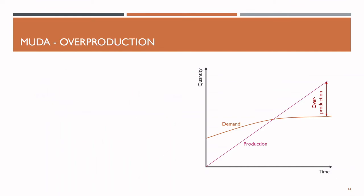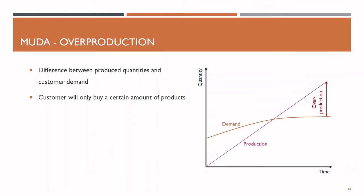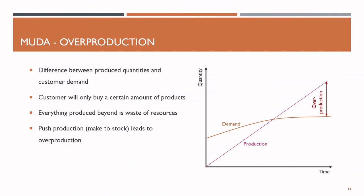Overproduction, the fifth waste, is connected to the topic of inventory. It is defined as the difference between produced quantities and customer demand. Our customers will only buy a certain amount of our products – everything we produce beyond that is waste of our resources. Overproduction is a symptom of push production or make-to-stock, since this type of production control is not directly triggered by customer demand. An effective solution is switching to pull or make-to-order production, which we will learn more about in the next lecture.